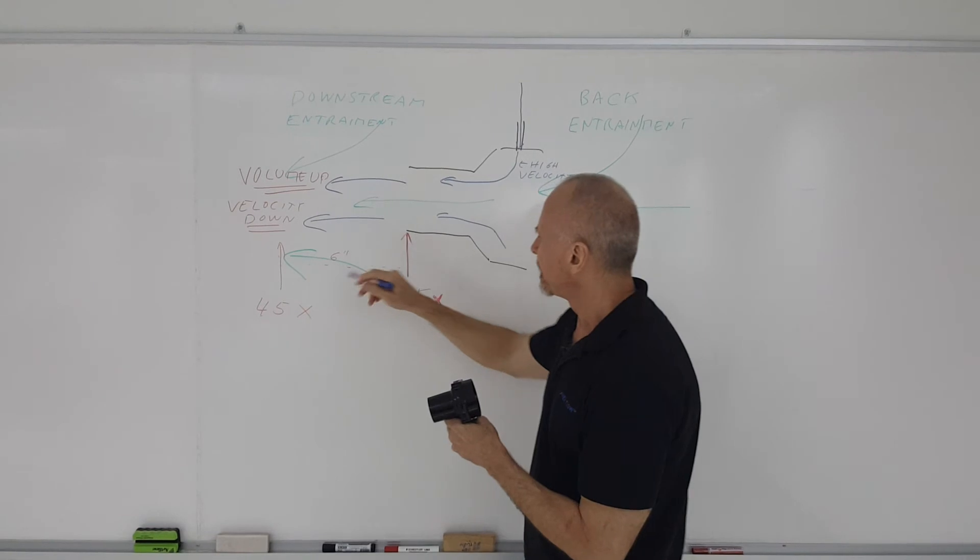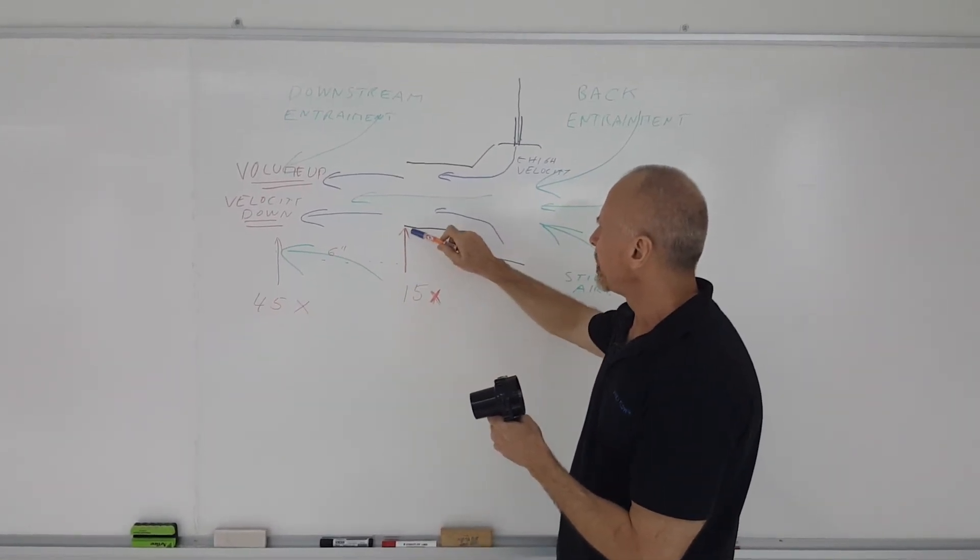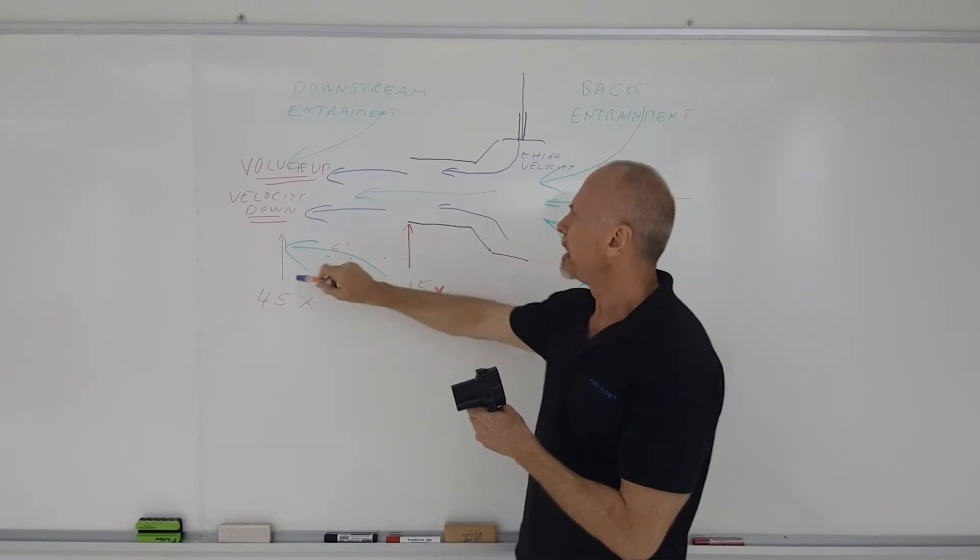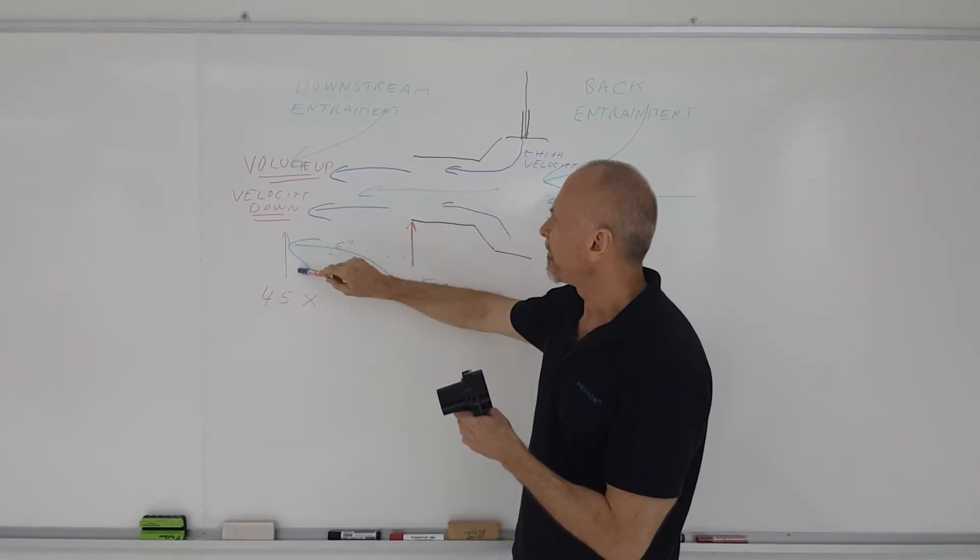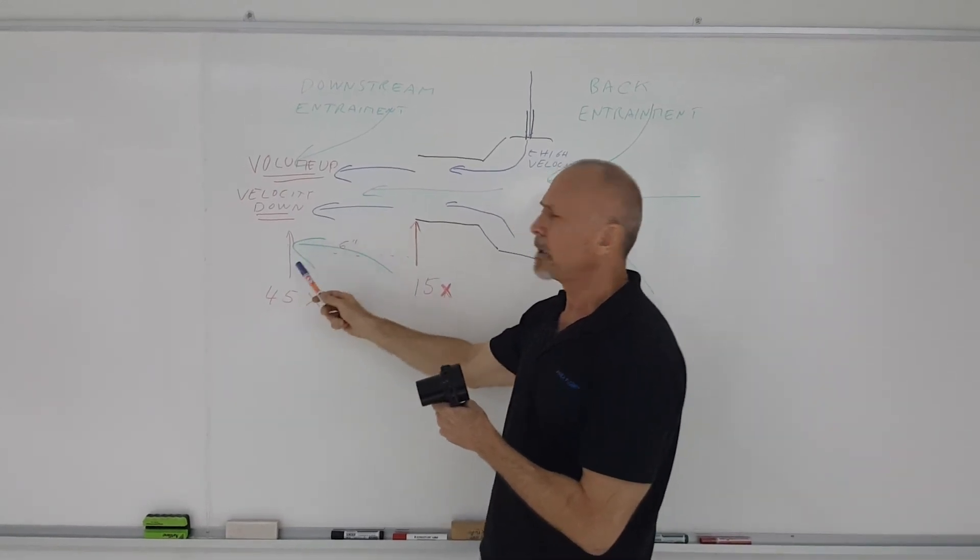And again, another six inches down, you should get another three times that. So if the amplification ratio is fifteen at the exit, it should be three times that, or forty-five times, six inches away. But recognize that at six inches away, it's already slowing down.